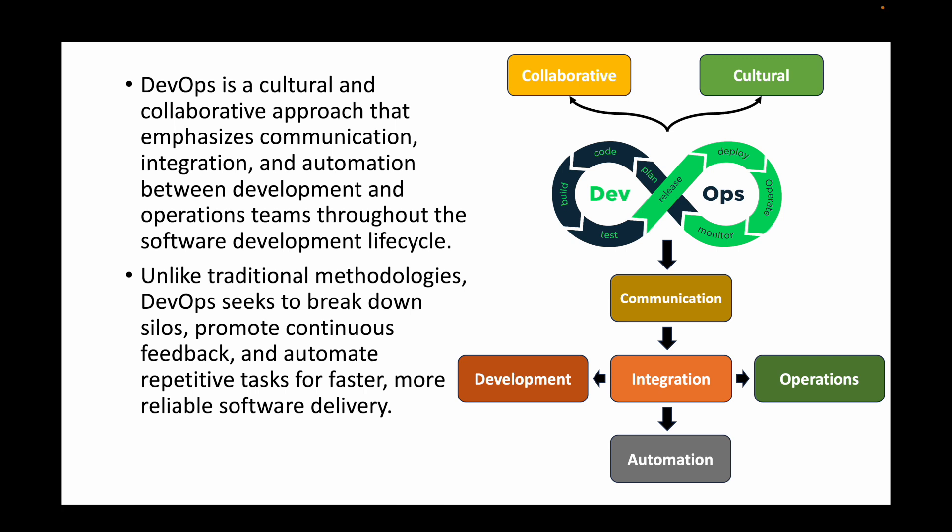Unlike traditional methodologies, the main idea of DevOps is to break down the silos and promote continuous feedback — continuously getting feedback from the ops team, the development team, or other teams involved in software development — and also automate any repetitive tasks, which helps us deliver faster and more reliable software. That's how it differentiates from traditional methodologies in the IT industry.